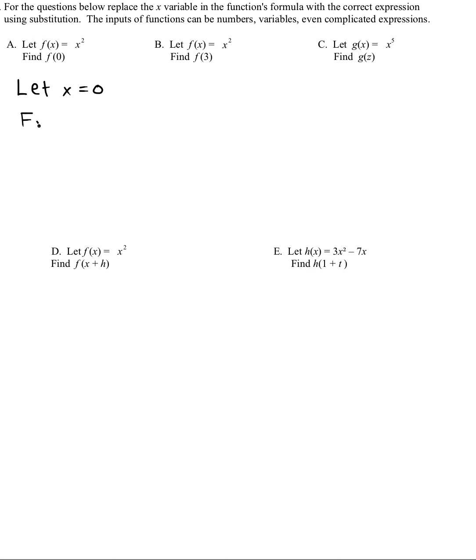And we're supposed to find f of zero. So you may wish to start by just rewriting the original function formula. F of x equals x squared. A next step could be to replace the x with open parentheses where you're about to put something or substitute something in where the x was.